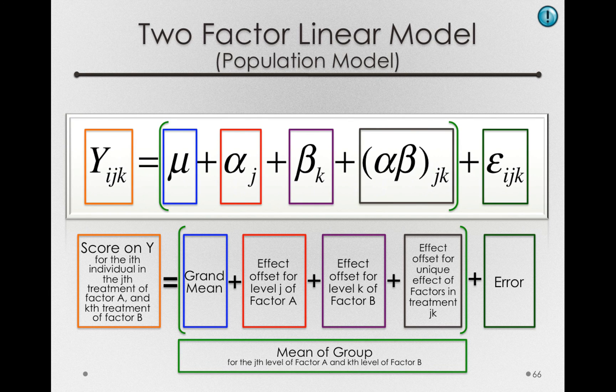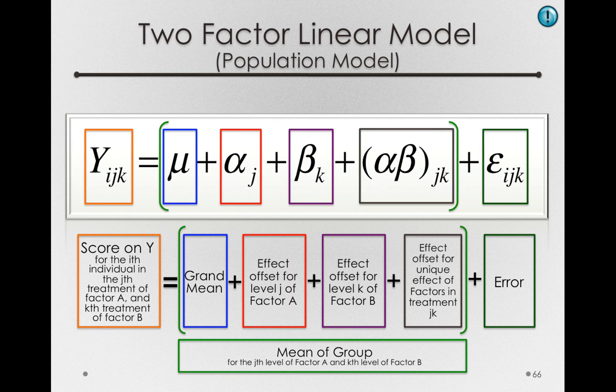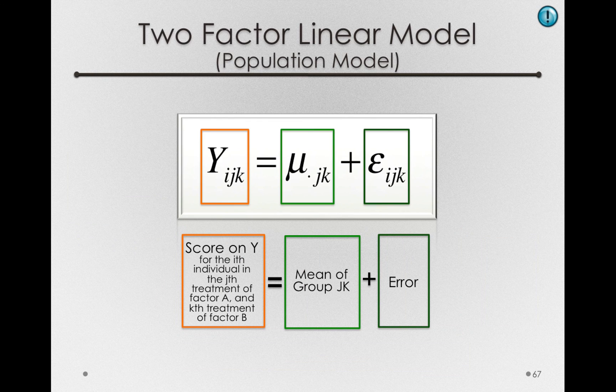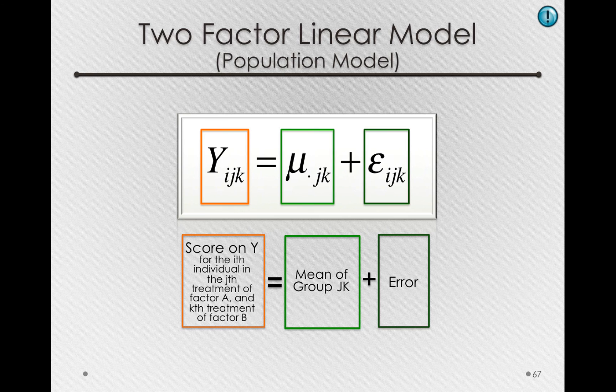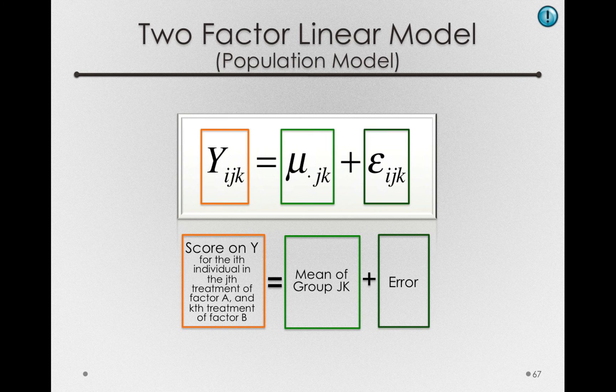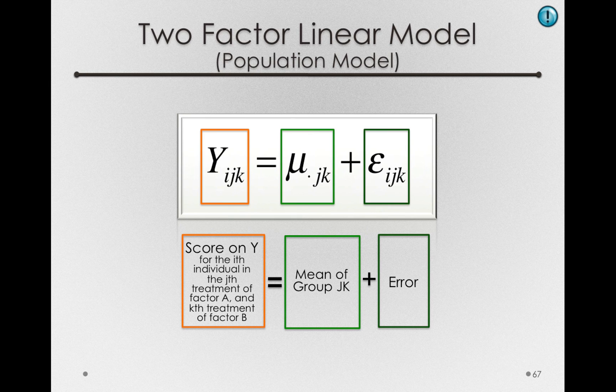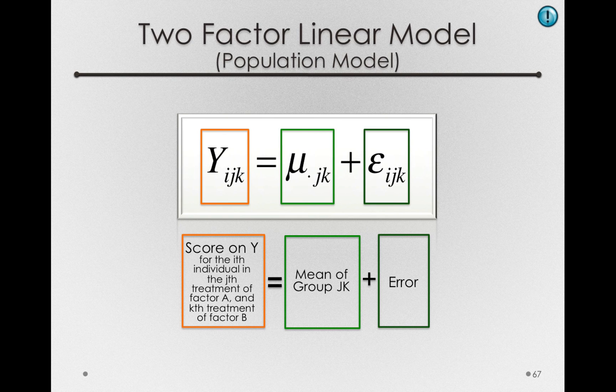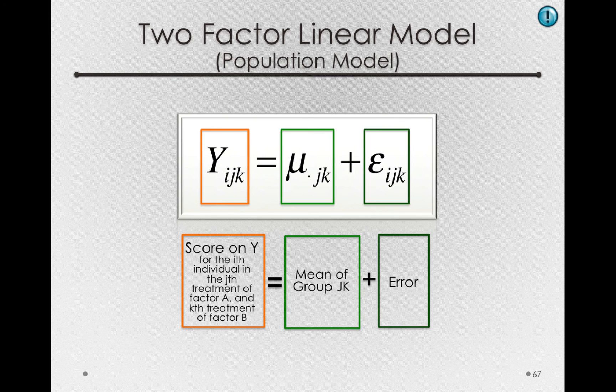Or said differently, this is just the mean of the group for the jth level of factor A and the kth level of factor B. So I could have just as easily written this model like this: the score on y for the ith individual in the jth treatment of factor A and the kth treatment of factor B is just equal to the mean of group jk plus individual error.